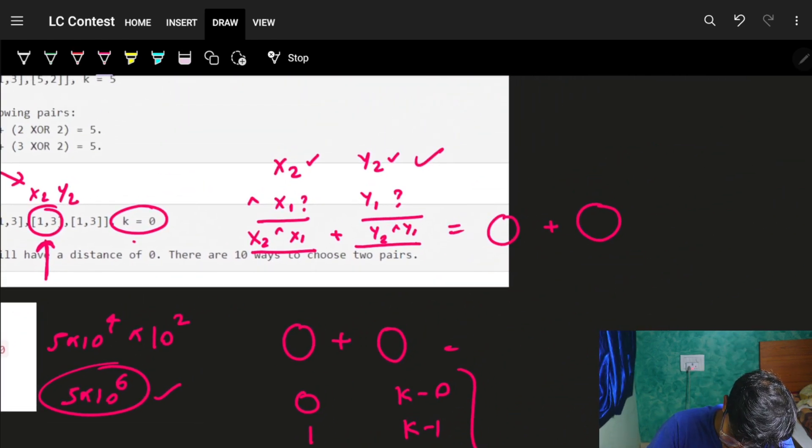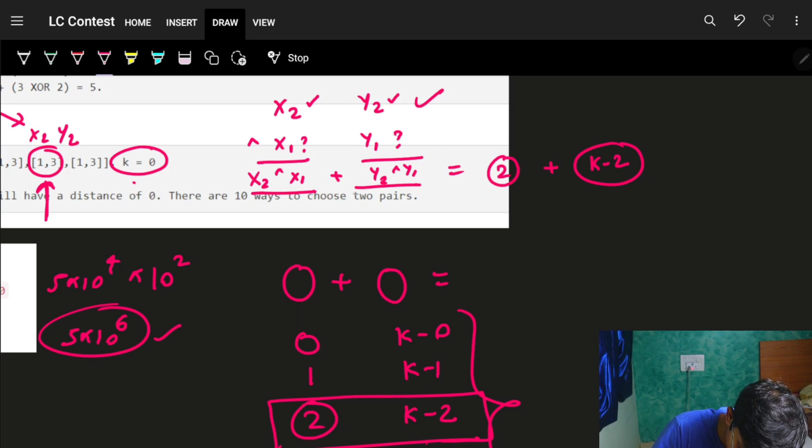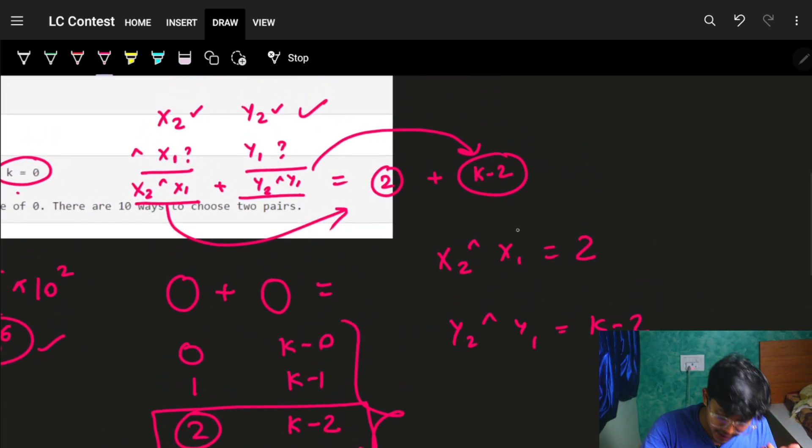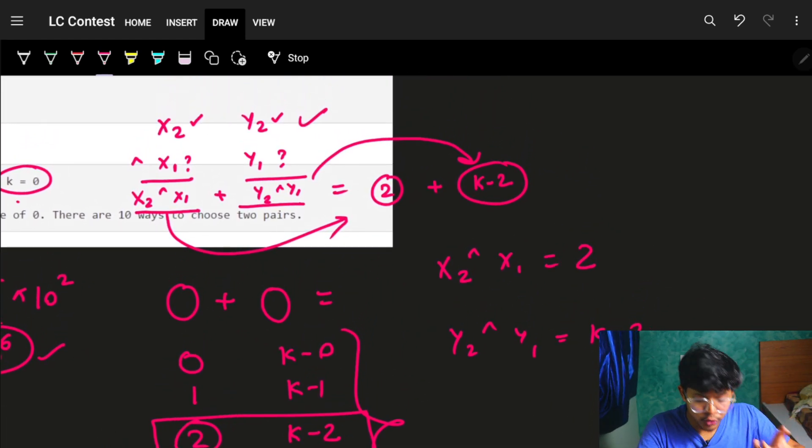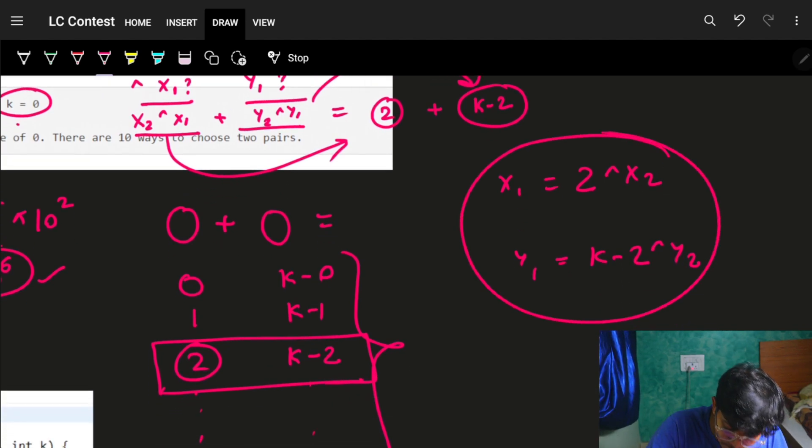What I'll do is: I know my output should have x2 XOR x1 equal to some value, let's say 2, and y2 XOR y1 should be k-2. If you XOR x2 on both sides, you can find x1. Similarly, XOR y2 on both sides to find y1. You were able to find x1 and y1, which were the unknowns.